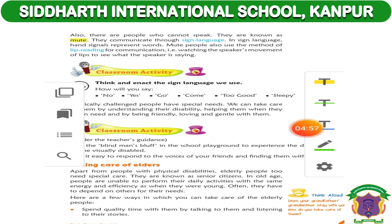A person who has the knowledge of lip reading can tell what you are trying to communicate by watching the movement of your lips. In lip reading, a person who cannot hear simply watches the speaker's lip movements and tries to understand what is being said.